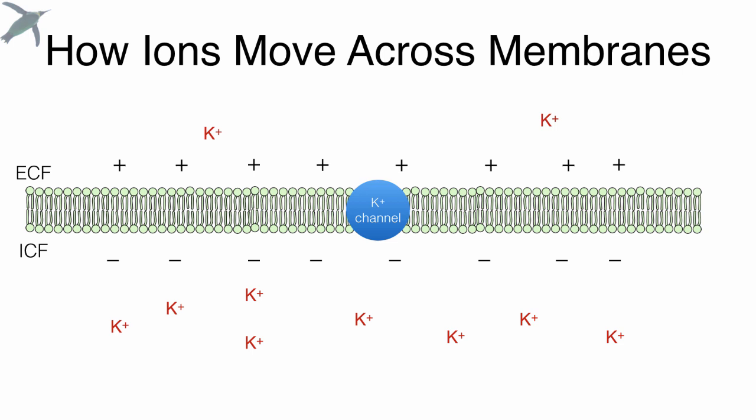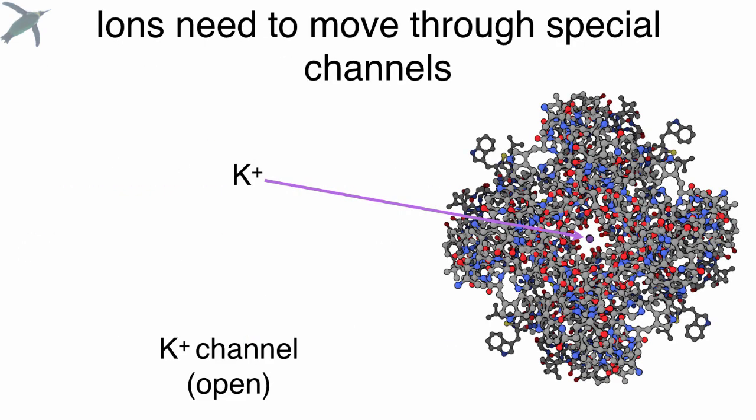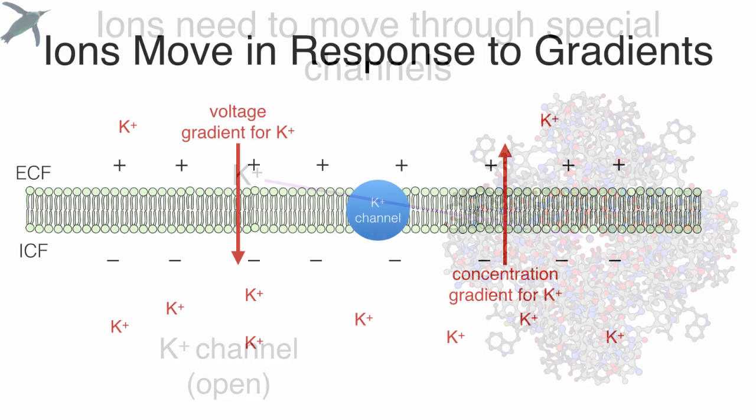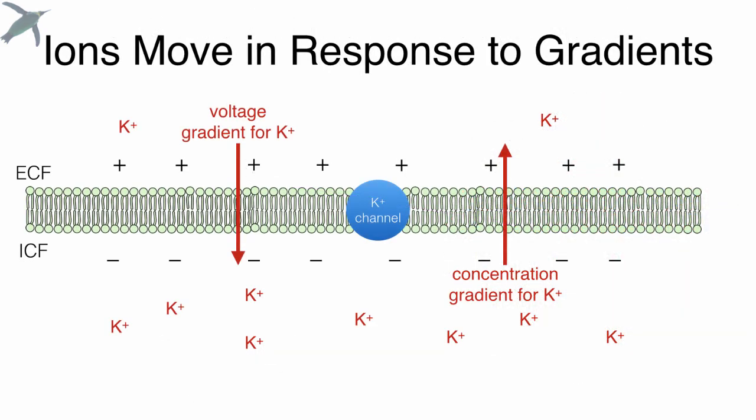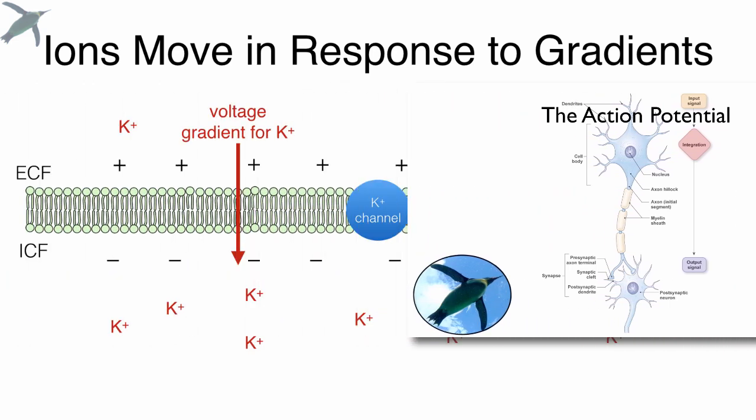Now, please recall ions have to move through specialized channels. These are proteins in the cell membrane that are very specific to particular ions. But they are just like little doors. The ions are actually moving on their own in response to concentration gradients, as well as voltage gradients. If this is not a familiar idea for you, you will want to check out my video on the action potential. Of course, I will link that below.